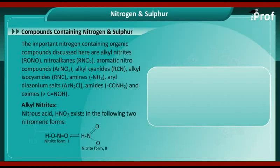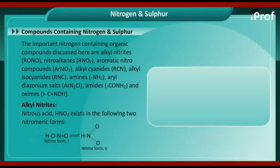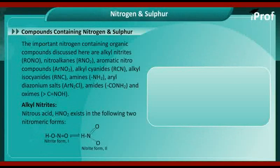Compounds containing nitrogen and sulfur. The important nitrogen-containing organic compounds discussed here are: alkyl nitrites (RONO), nitroalkanes (RNO2), aromatic nitro compounds (ArNO2), alkyl cyanides (RCN), alkyl isocyanides (RNC), and amines (NH2).